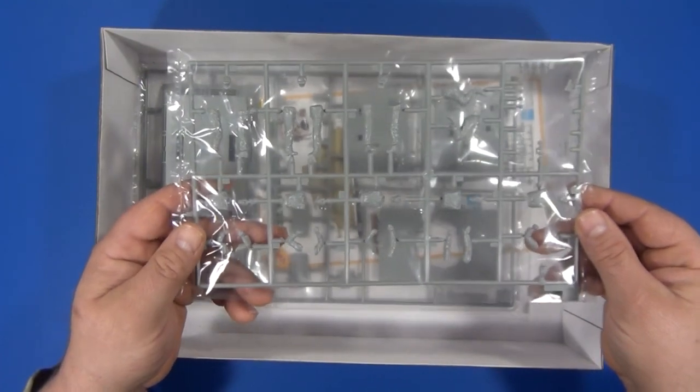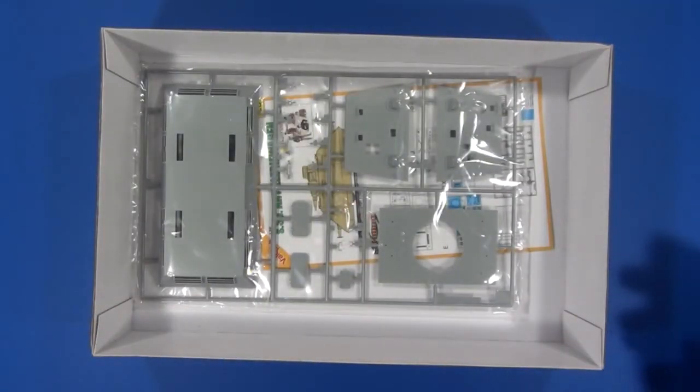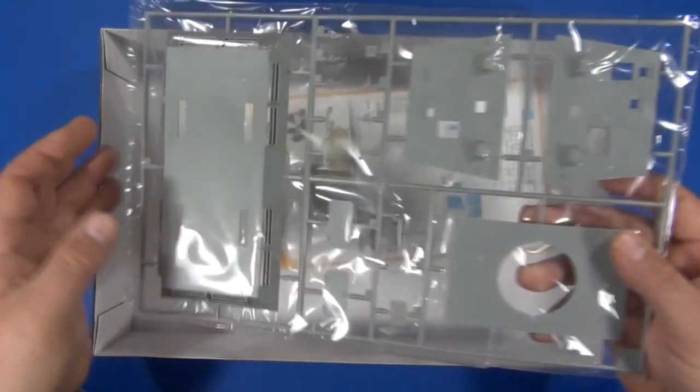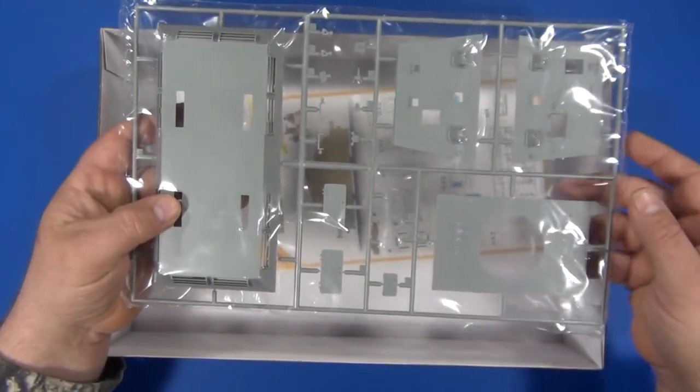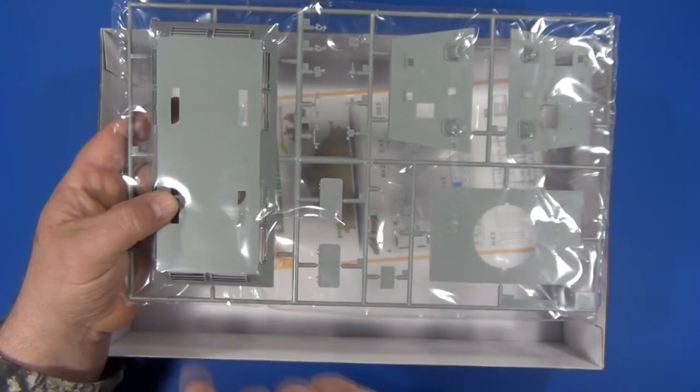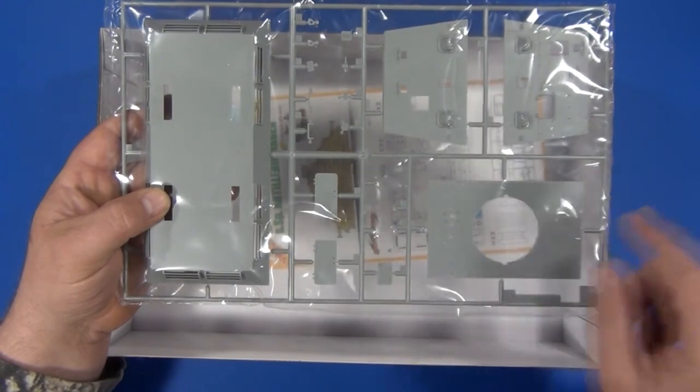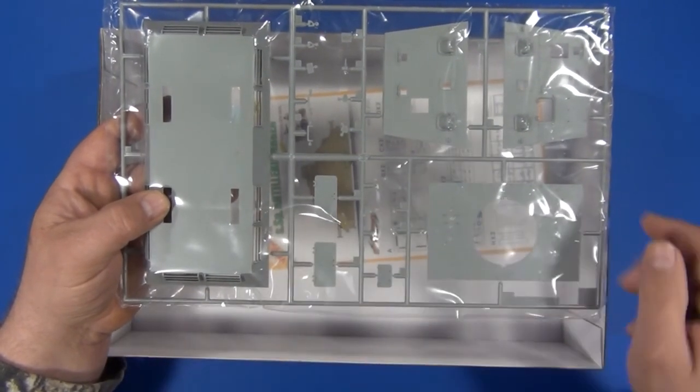This sprue here contains the lower hull section, the front and back and top plates, along with some crew access doors.